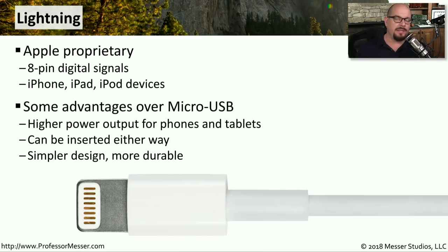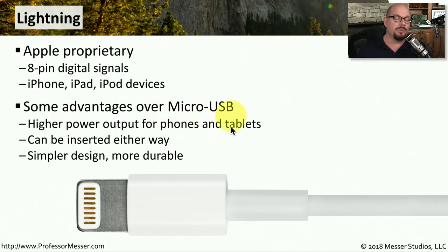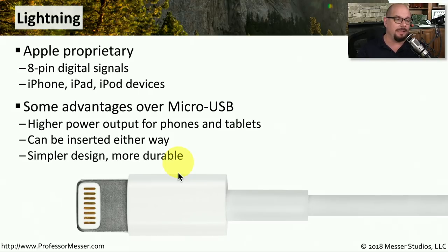Although this is about the same size as a micro USB connection, there are a number of advantages, which is what drove Apple to use the lightning connector over USB. One is that it's able to output a higher amount of power, so it's able to charge phones and tablets a bit faster than micro USB. This can also be inserted either way. With micro USB, you have to make sure to insert it the correct way. With lightning, it doesn't matter — you can flip it over and plug it in, and it will work exactly the same. Because of that, it's a bit simpler in design, and Apple was able to make it a bit more durable than a traditional USB cable.